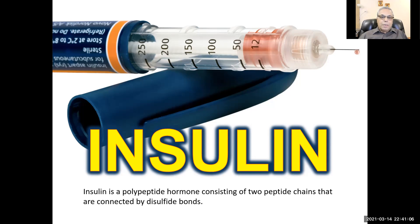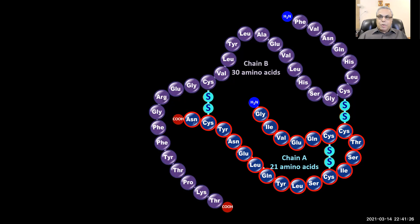Insulin, as you all know, is a polypeptide hormone consisting of two peptide chains that are connected by disulfide bonds. So let's have a more detailed look at insulin. Here is the insulin molecule — it has a beta chain and an alpha chain. The beta chain has 30 amino acids and the alpha chain has 21 amino acids, and there are three disulfide bonds.